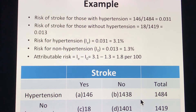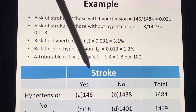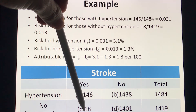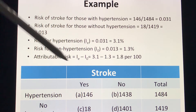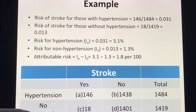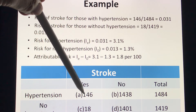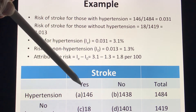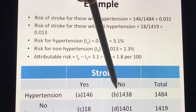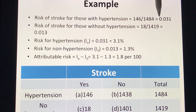Here's a classic example. We have the disease: stroke — yes or no — and the risk factor: hypertension versus no hypertension. What is the risk of stroke for those with hypertension? That would be 146 divided by 1,484, which gives a value of 0.031. So the risk of stroke for those with hypertension is estimated at 0.031.